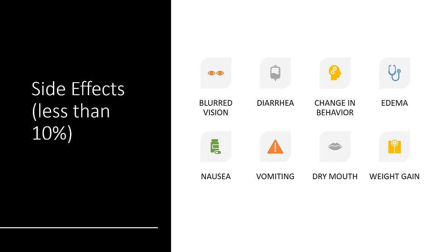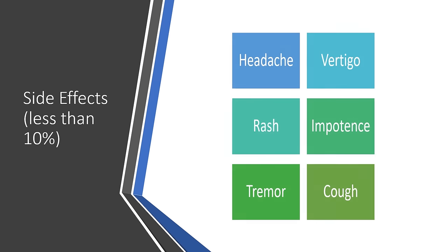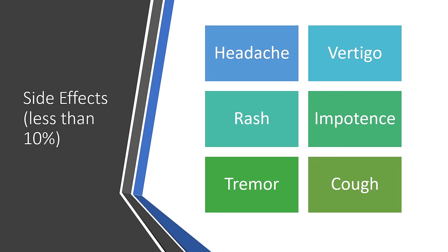Other side effects — occurring in less than one in ten people — include blurred vision, diarrhea, changes in behavior (more common in pediatrics), edema or swelling in the arms or legs, nausea, vomiting, dry mouth, and weight gain. Additional less-than-10% side effects include headache, vertigo, impotence (about 2%), rash, tremor, and cough.